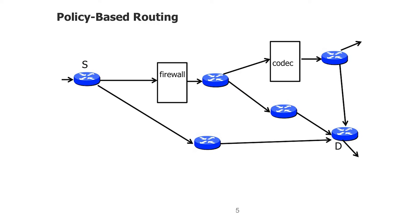Suppose we have a situation where packets are coming in at S and want to go out to D. They all have the same destination, but some of them I don't trust — I have to stick them through a firewall, maybe codec, till they get to D. Other packets I still don't trust but don't need to encode. And some I totally trust and they can just take the purple route. I can't do that with destination-based routing.